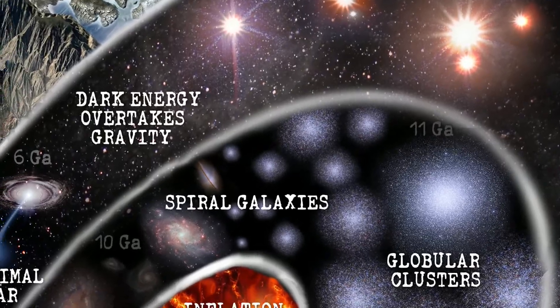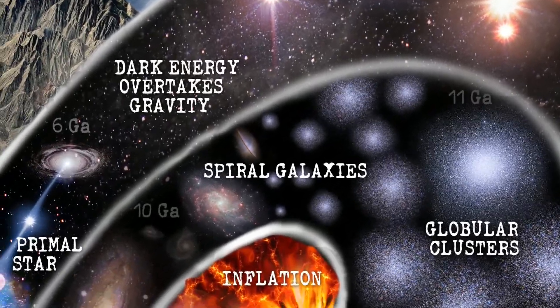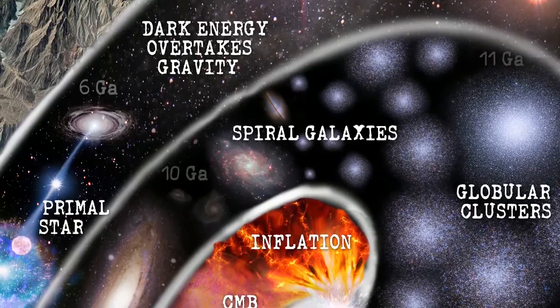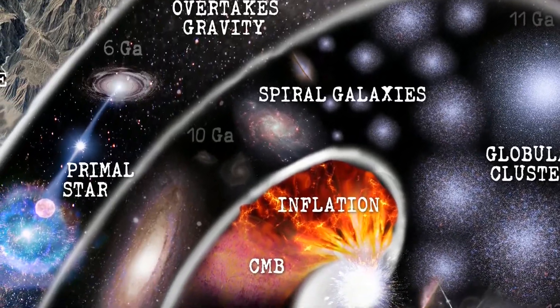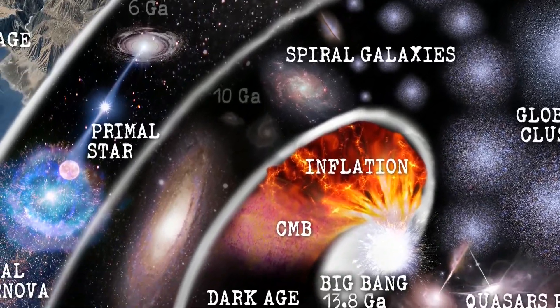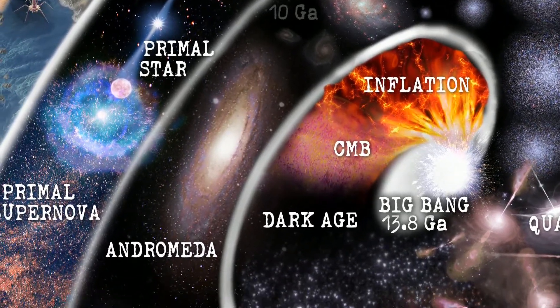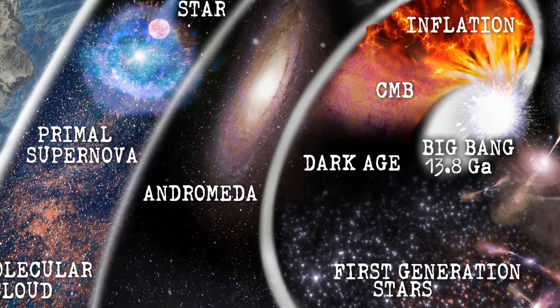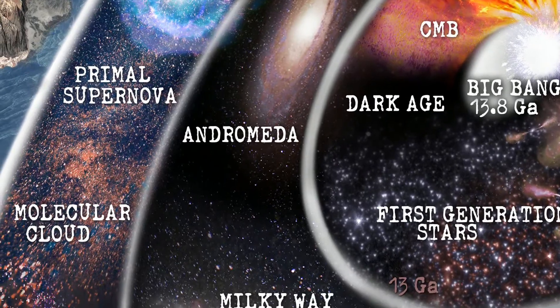There are three kinds of stuff. Dark energy overtakes gravity now, so the universe starts kind of slowing down. Primal star, there's also regular matter, primal supernova, molecular cloud.